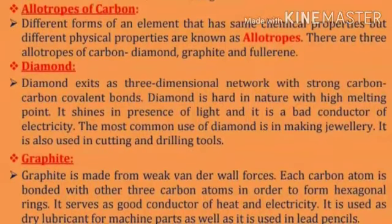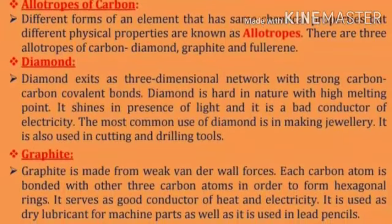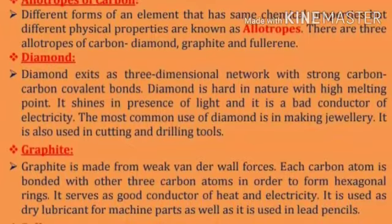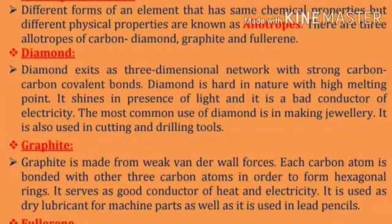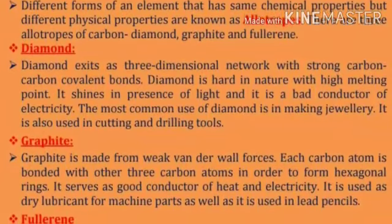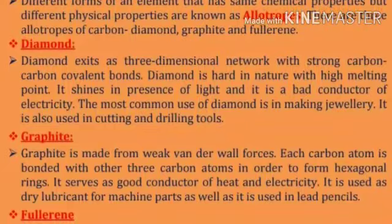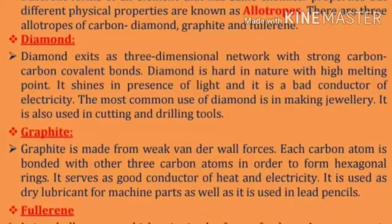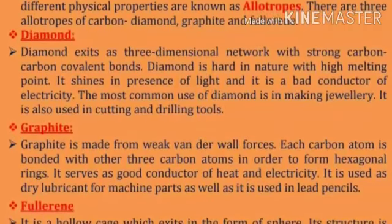Diamond exists as a three-dimensional network with strong carbon-carbon covalent bonds. Diamond is hard in nature with a high melting point. It shines in the presence of light and it is a poor conductor of electricity. The most common use of diamond is in making jewelry and it is also used in cutting and drilling tools.